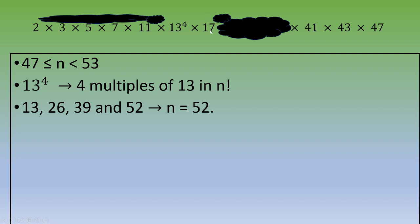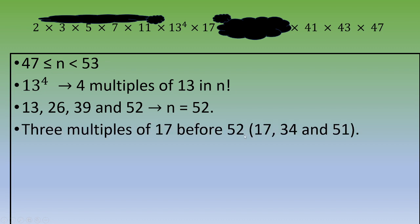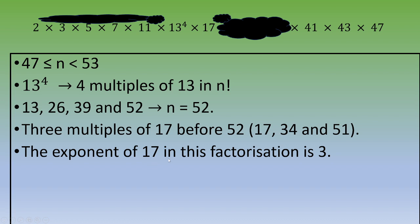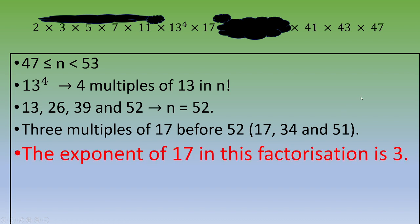The question was to find the exponent of 17 in this factorization. So we look for the multiples of 17 in 52 factorial. The multiples of 17 are: 17 × 1 = 17, 17 × 2 = 34, and 17 × 3 = 51. There are three multiples of 17, so the exponent of 17 in this factorization is 3. Thanks for watching this video, and I hope to see you in the next one.